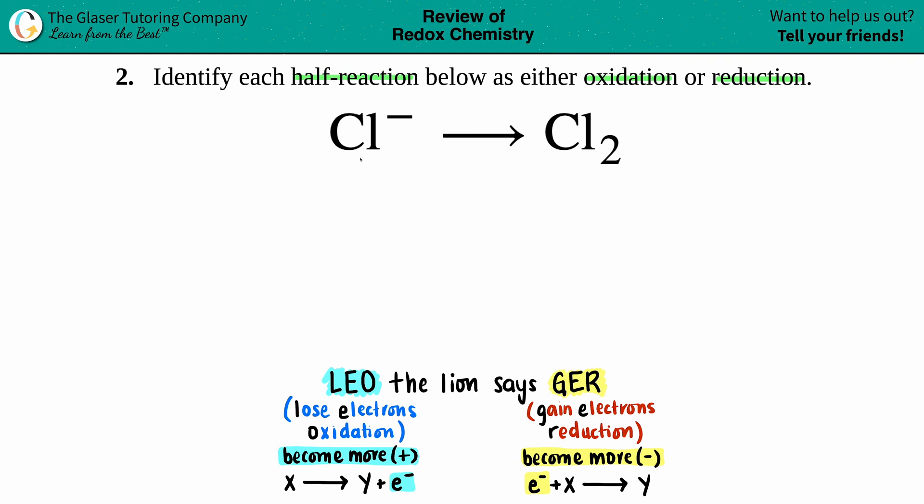We have to find the charges of what chlorines are on both sides. Now for this one, Cl⁻, they literally said that it was a negative one, right? There was just a negative, so that means that it's a negative one charge. So I have a negative one on this side.